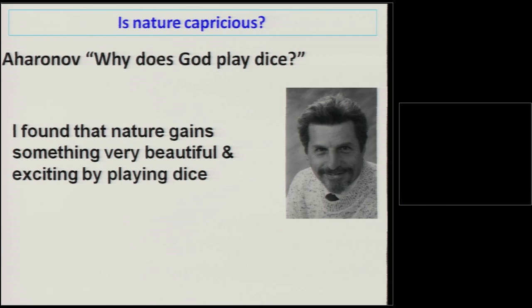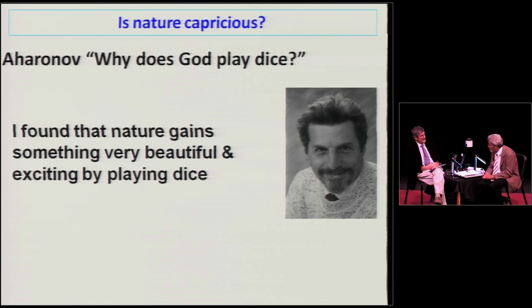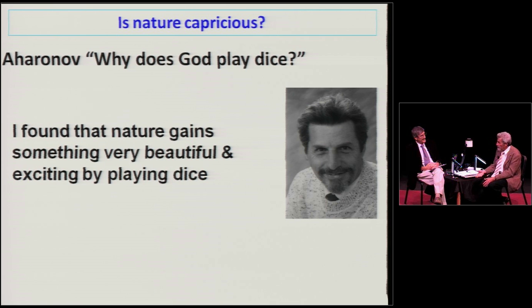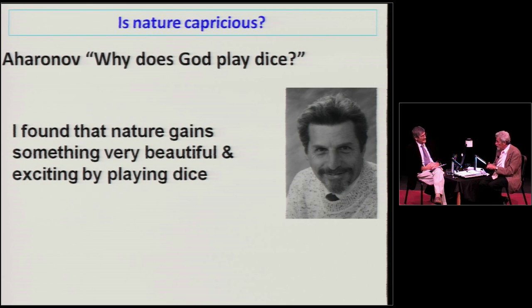So in principle, if you look at the whole universe as a quantum system, it has one state of the universe that comes from the origin of the universe to the present - I call this the history state - and then there is another state that comes back from the future, which you can call the destiny state of the universe.